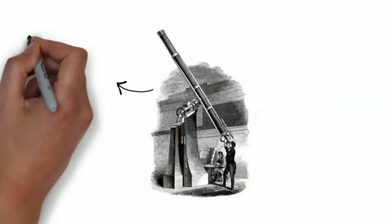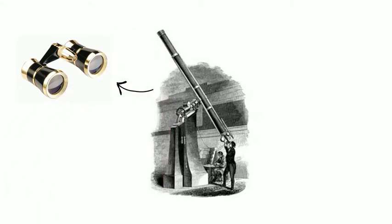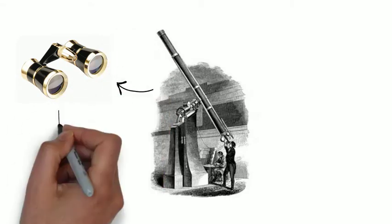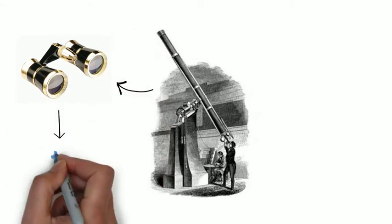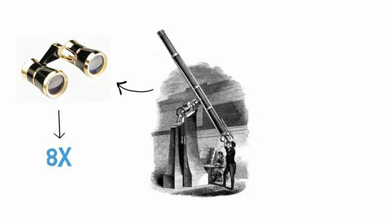Galileo's telescope was similar to how a pair of opera glasses worked, a simple arrangement of glass lenses to magnify objects. His first versions only improved the view to the 8th power.